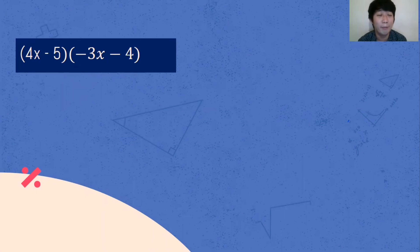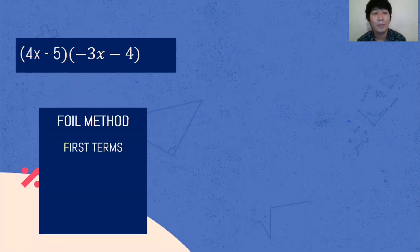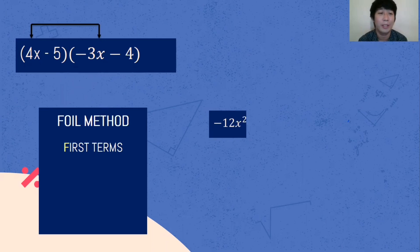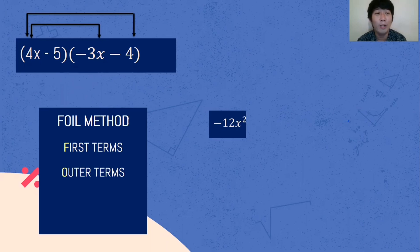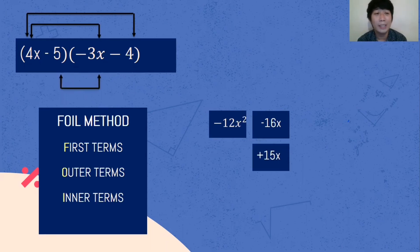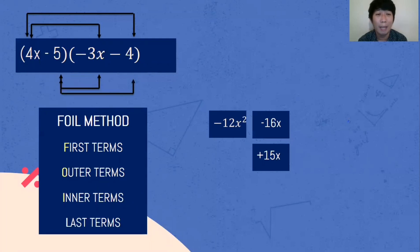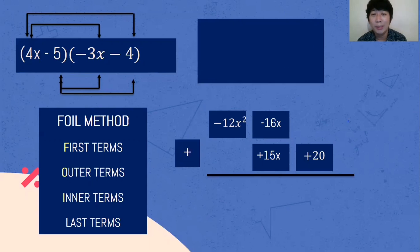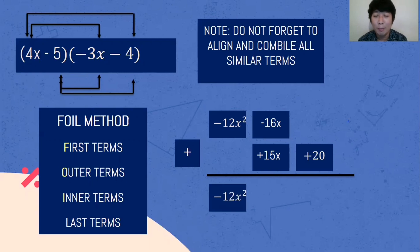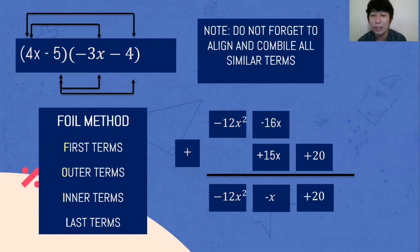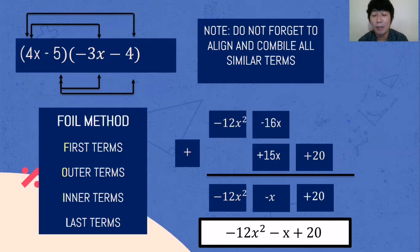Another example: the quantity of 4x minus 5 multiplied by negative 3x minus 4. Using the FOIL method. First terms: 4x multiplied by negative 3x — 4 multiplied by negative 3 is negative 12, and x multiplied by x is x squared. Outer terms: 4x multiplied by negative 4, 4 times negative 4 is negative 16x. Inner terms: negative 5 multiplied by negative 3x, so that is positive 15x. Last terms: negative 5 multiplied by negative 4, that is positive 20. Simplifying — do not forget to align and combine all similar terms. Bring down negative 12x squared, then negative 16x plus 15x: follow the sign of the higher absolute value, negative 16 plus 15 is negative x. Then bring down 20. Our final answer is negative 12x squared minus x plus 20.